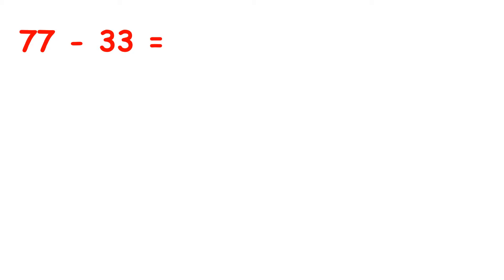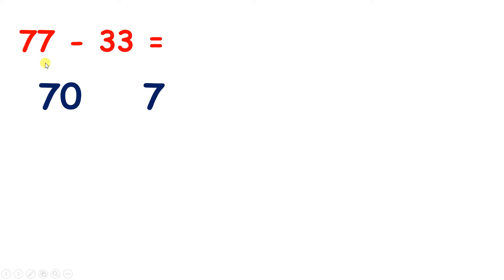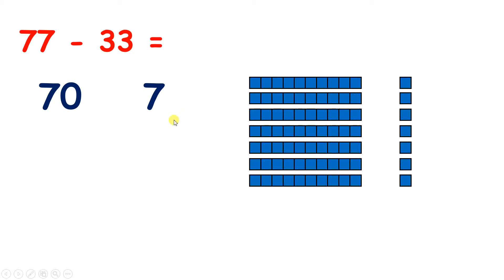In this lesson, we're going to subtract two-digit numbers by partitioning. So here we have 77 minus 33. We can partition the number 77 into 70 and 7, because we have 7 tens and 7 units.